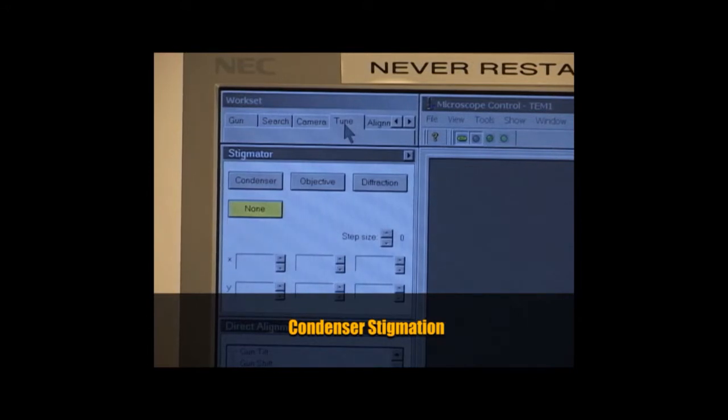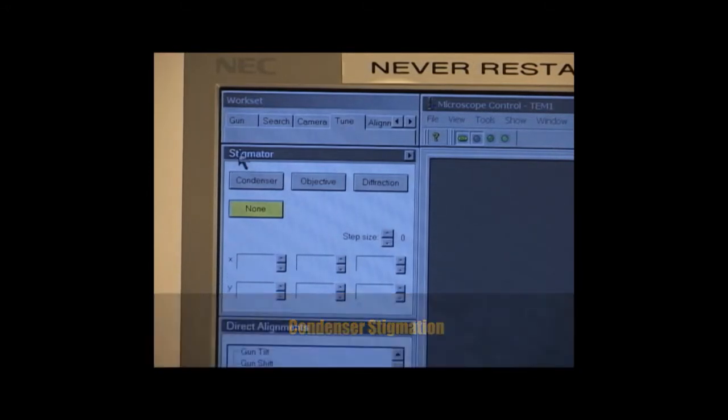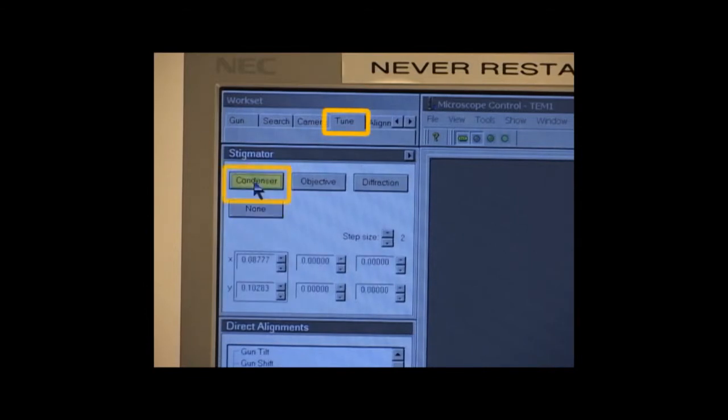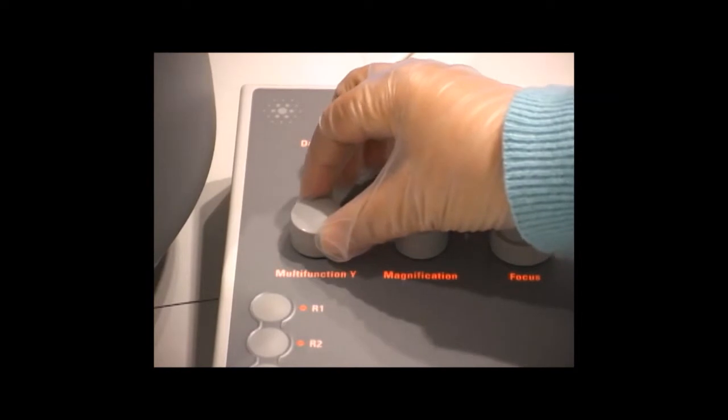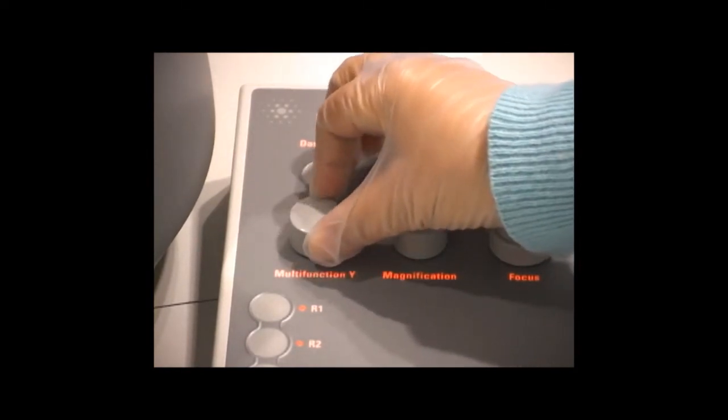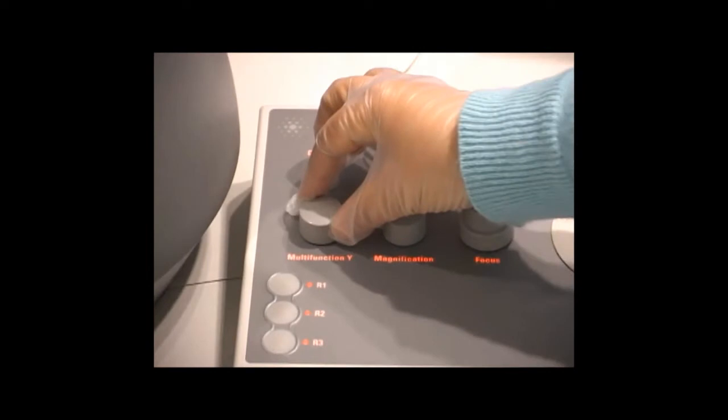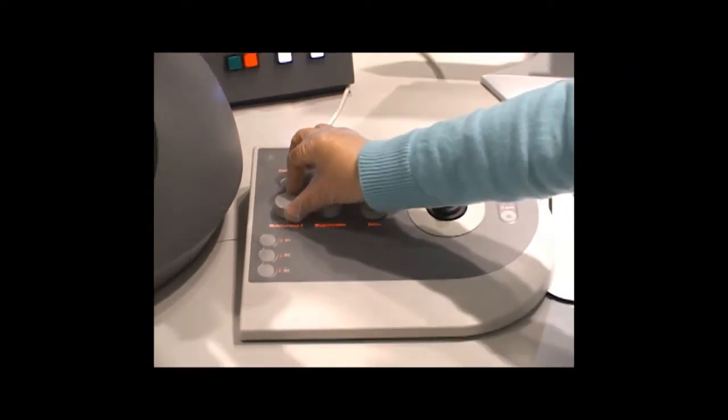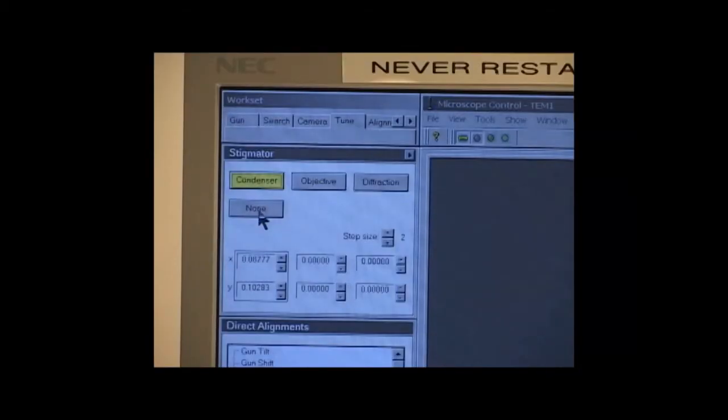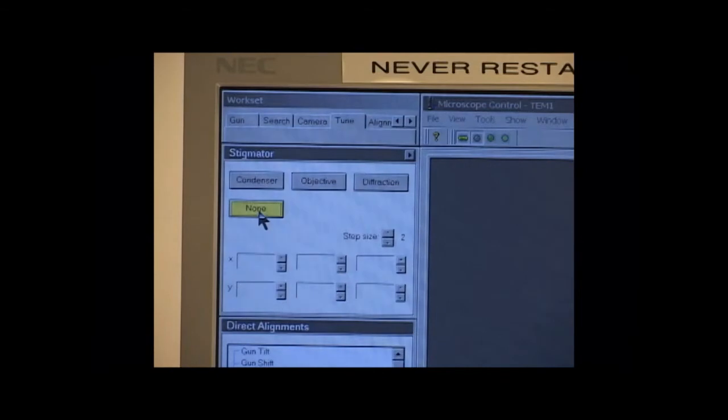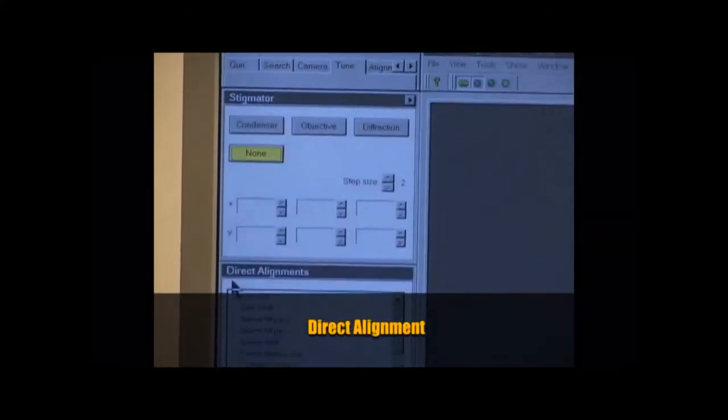Next, we adjust the condenser stigmation. Click on Tune and Condenser from the Stigmator menu. Use the multifunction knobs, MF, on either side of the scope to adjust the condenser stigmation in both X and Y directions to ensure the beam is round and expands concentrically. After you are finished, be sure to click None, otherwise the multifunction will continue to control the stigmation.